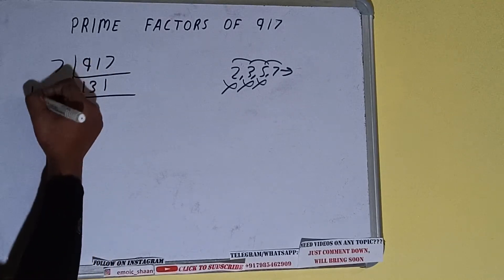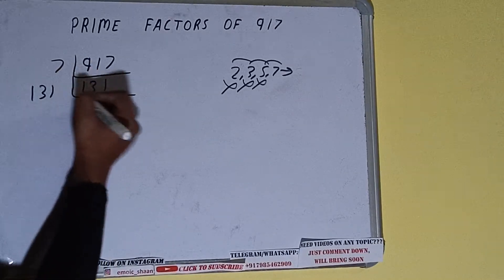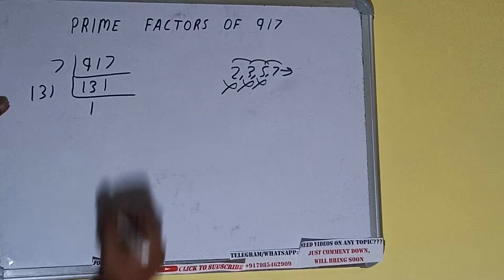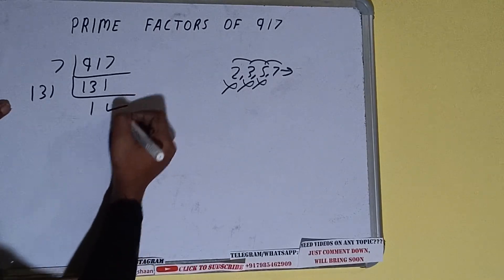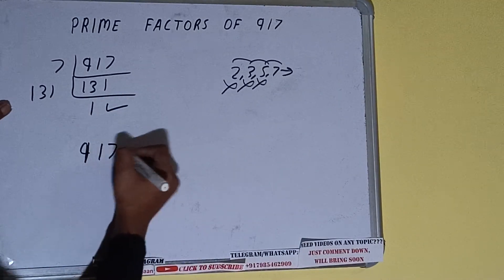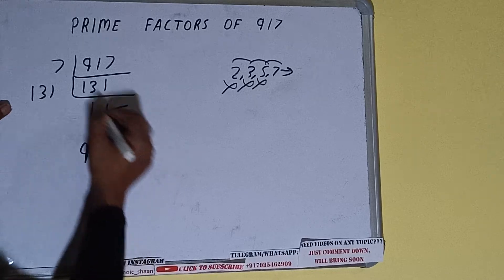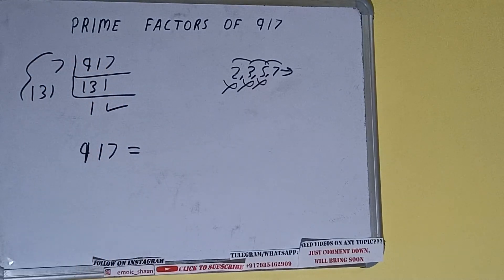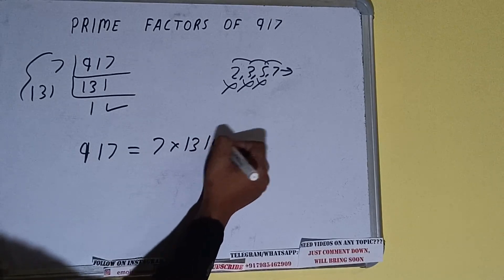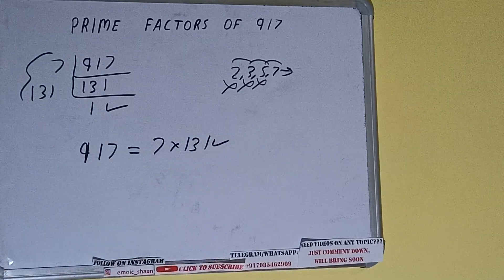Once we divide by 131 we get 1, and once we get 1 we need to stop. Then we do one last thing: the prime factorization of 917 equals the product of whatever we have on the left side, that is 7 × 131. That will be the answer.